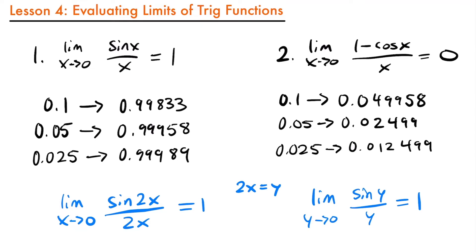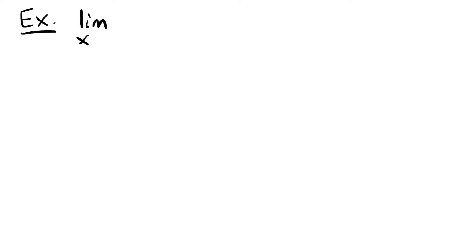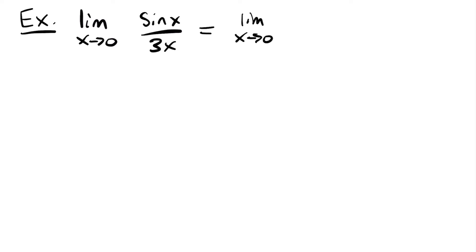Now that we've introduced these special trig limits, it's time to do some examples. First, we'll look at the limit as x approaches 0 of sine x over 3x. We look at this and want to find our special limit within it. I see sine x over x, but we also have this constant of 3 in the denominator. One technique is to split things up: I'll pull out the constant, writing this as 1/3 times sine x over x.